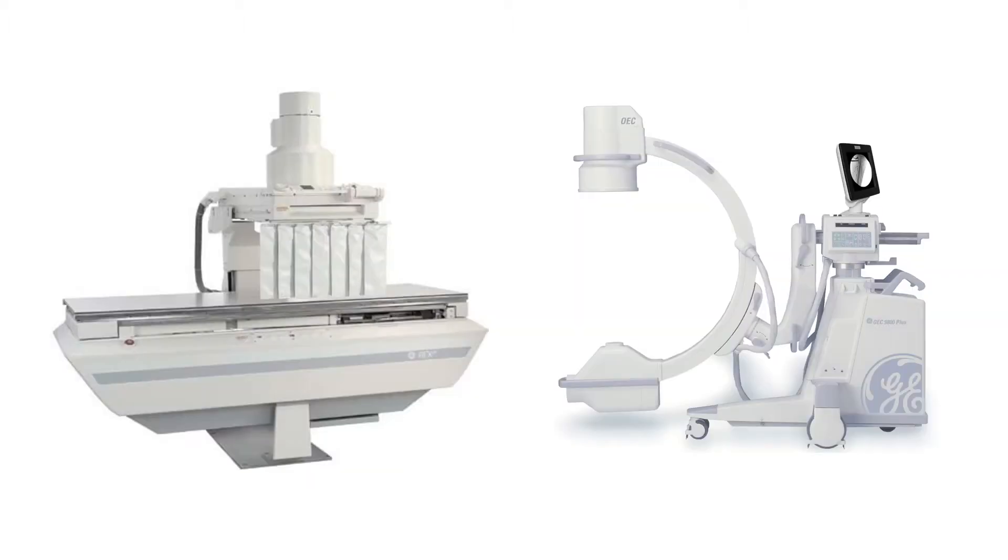The x-ray tube is usually hidden under the patient within the table. The image receptor is housed above the patient. As you move the image receptor, the tube underneath will move to stay aligned. There's no need to worry about detenting.